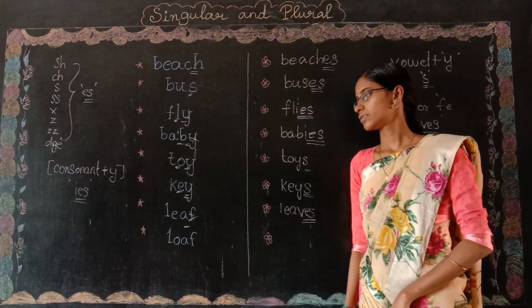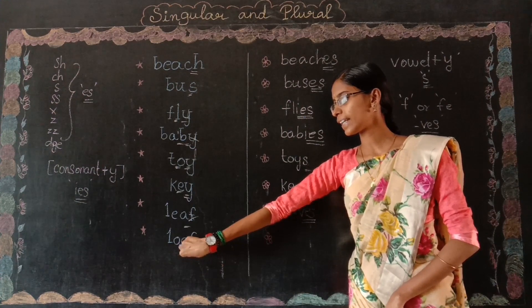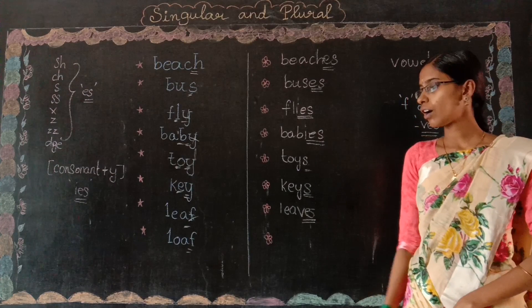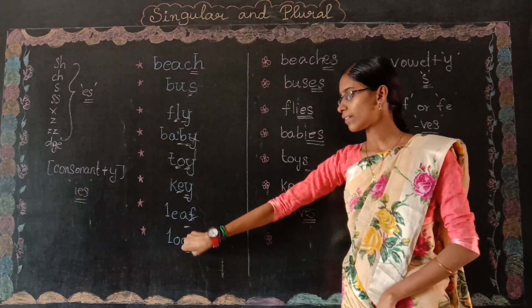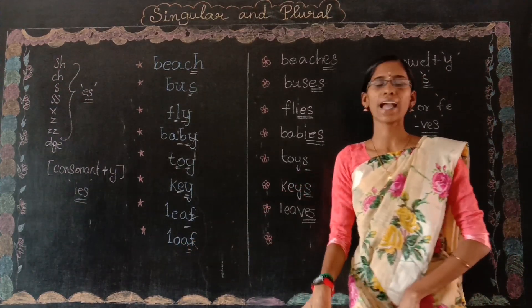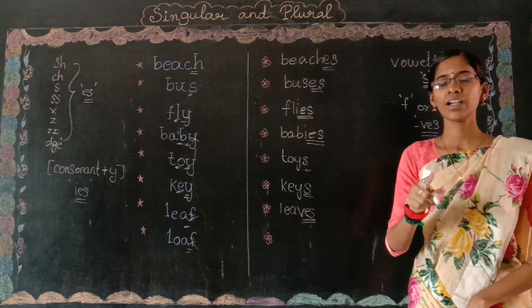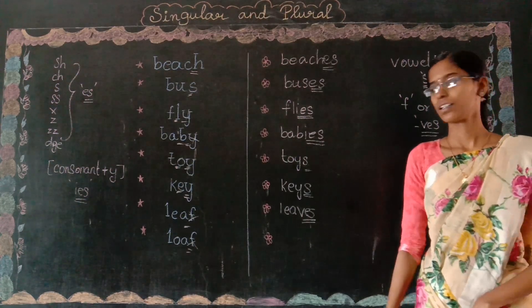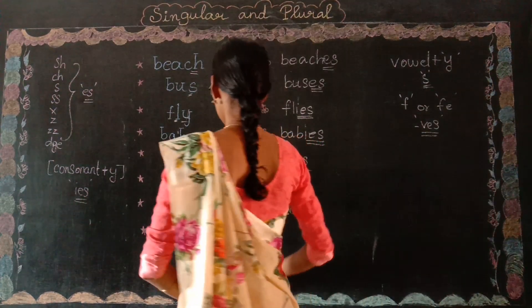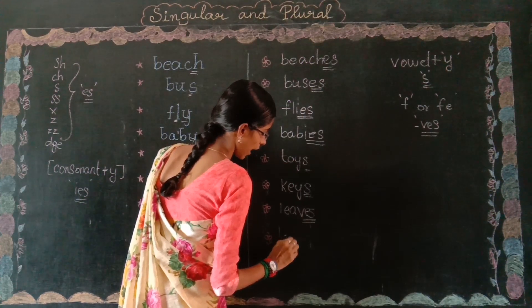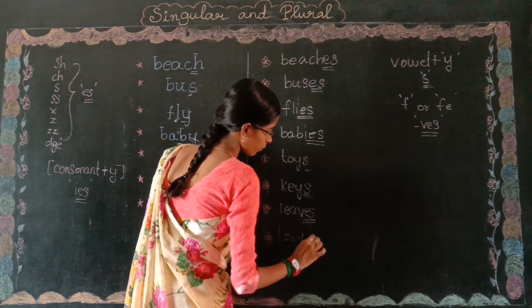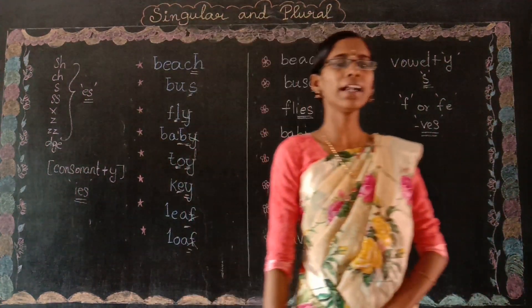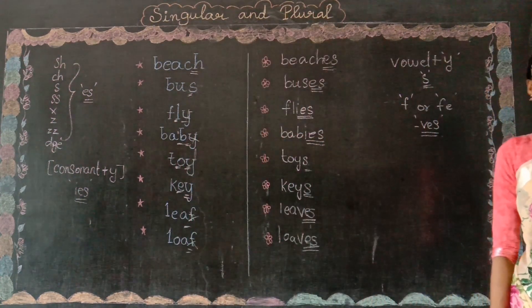See the last word: 'loaf.' We can say loaf of bread. It ends with F. So if it ends with F, you have to remove F and add VES. So loaf becomes 'loaves.' We say loaf of bread in singular, or loaves of bread in plural.